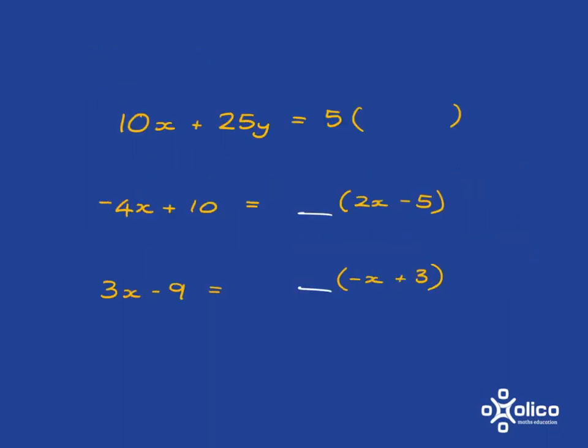I'm now going to give you some examples where I give you one of the factors and you have to try and find the other. For example, if I've got 10x plus 25y and it's equal to 5 multiplied by something, let's work out what that something is. We know that we've got to do 5 multiplied by this and then 5 multiplied by that and end up with 10x plus 25y. So 5 multiplied by this first term has to give me 10x.